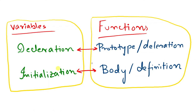For variables, the next step was to initialize a variable. But for a function, we cannot put a single value and say that we have initialized a function. The function has to be defined — its behavior has to be defined. So we say 'function definition' or the body of a function. That's the difference between variables and functions.